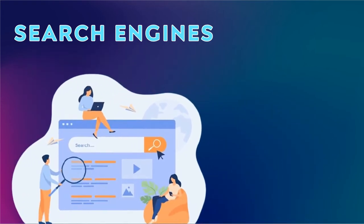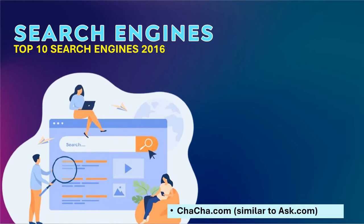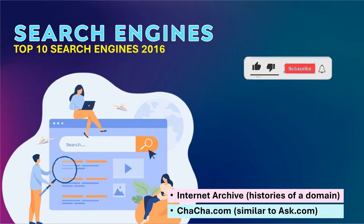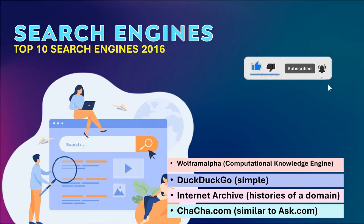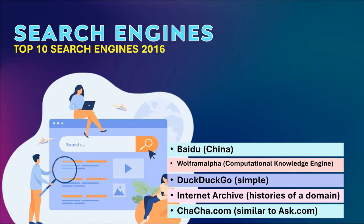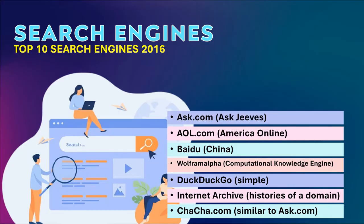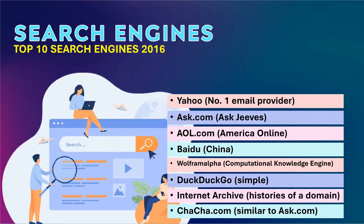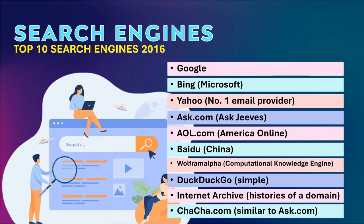Here are the top 10 search engines in 2016. Number 10 is ChaCha.com. Number 9 is Internet Archive. Number 8 is DuckDuckGo. Number 7 is WolframAlpha. Number 6 is Baidu. Number 5 is AOL.com. Number 4 is Ask.com. Number 3 is Yahoo. Number 2 is Bing. And number 1 is Google.